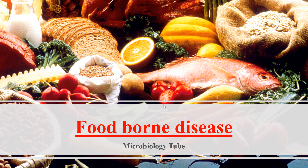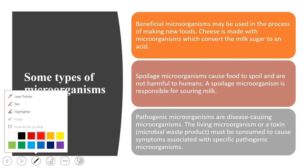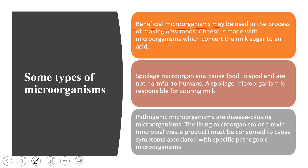Before talking about foodborne diseases, I would like to classify the types of microorganisms. First are the beneficial microorganisms — those microorganisms which are used for making food. For example, yogurt, cheese, kimchi, and kinema are products made by beneficial microorganisms through fermentation.